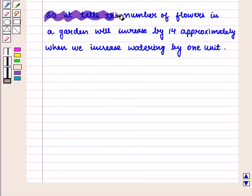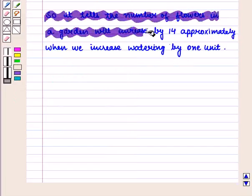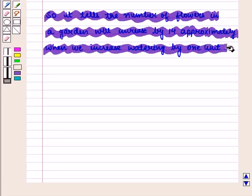So it tells us the number of flowers in our garden will increase by 14 approximately when we increase watering by 1 unit.